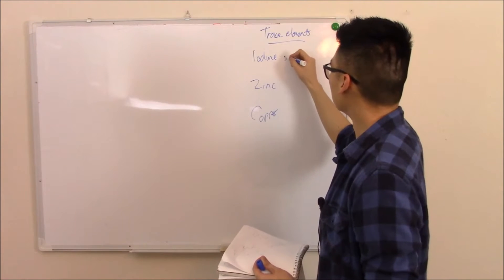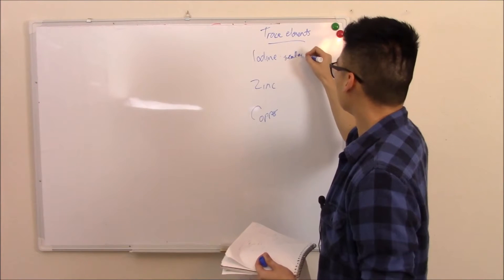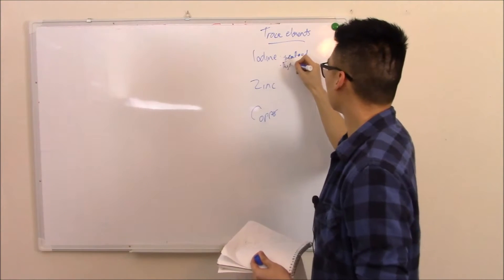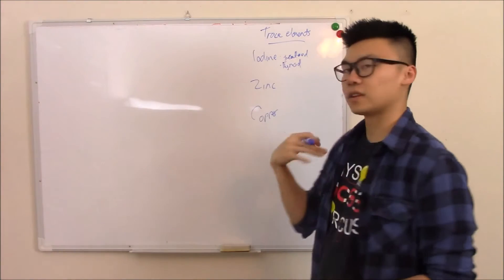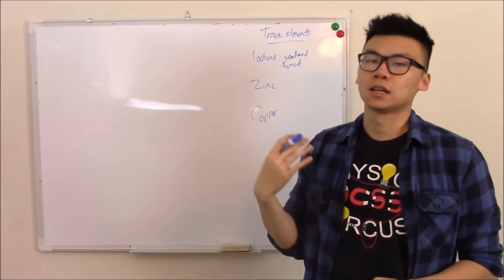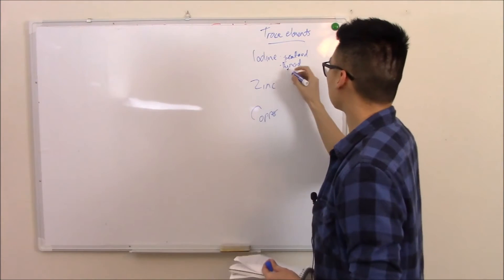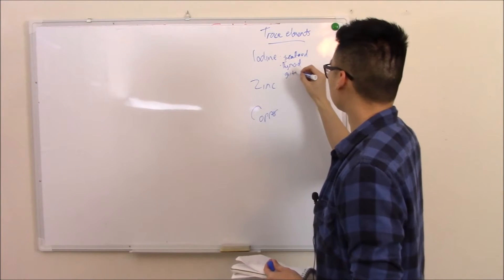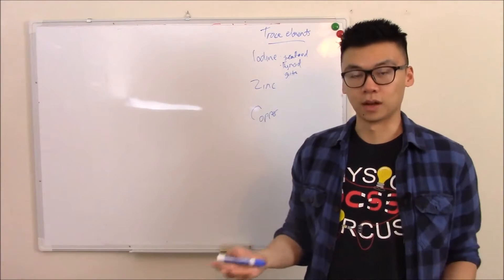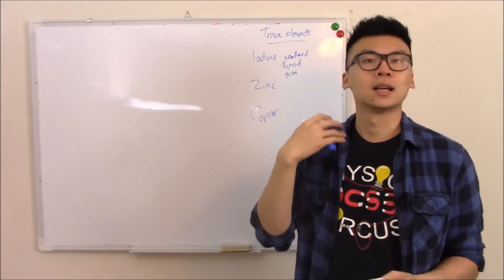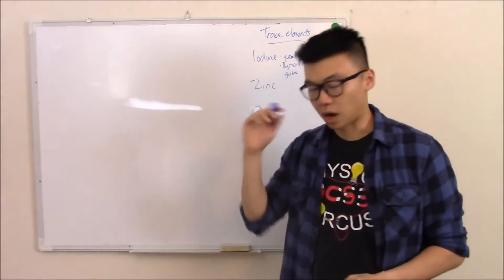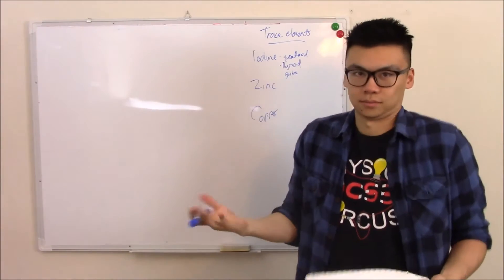Iodine is seen in seafood and is really important for thyroid function. If you don't have enough iodine — which isn't a big problem here because we put iodine in our salt — you get hypothyroidism. You get a goiter, which is the most common cause of a goiter and hypothyroidism in the developing world. More commonly seen in mountainous areas because there's no seafood there.